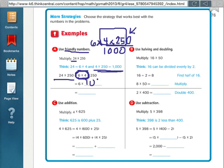So, 6 times 1,000. And then we know 6 times 1,000 is equal to 6,000. Friendly numbers means taking one or more of your numbers and breaking it up into an easier number to multiply by. In this case, they broke up 24 into 6 times 4.